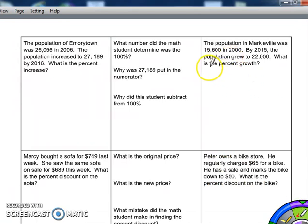So now we're going to look at this problem here about a population change. In this case, I'm actually not finding the total or the amount after the discount, but instead I'm finding the percent growth. That's a percent change. So to do that, the population in Markleville was 15,600 in 2000.